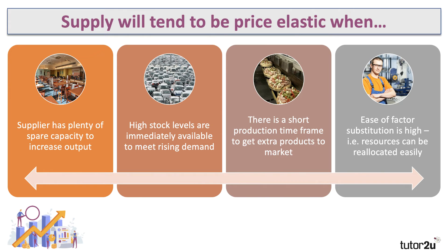Spare capacity includes spare labor, spare capital, machinery, spare raw materials, and component parts. Supply also tends to be price elastic when a producer has high stock levels — sometimes called inventory. If there's a rise in demand, a producer can immediately release those stocks onto the market. High stocks are consistent with elastic supply. Supply also tends to be price elastic when there's a short production timeframe — the pizza or baked beans examples are good ones, where mass production means it doesn't take many minutes or hours to get a new product to market.